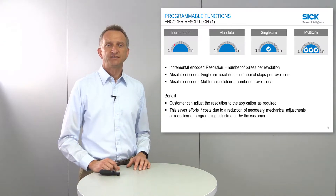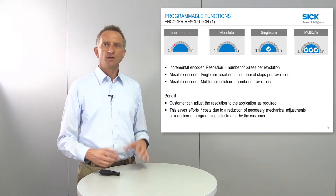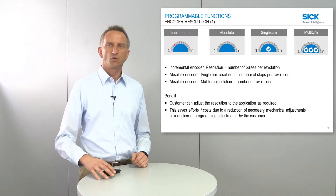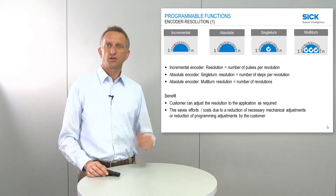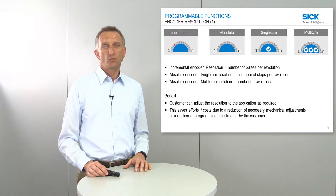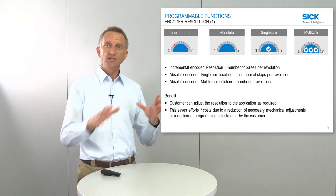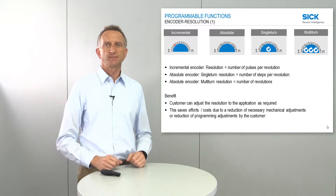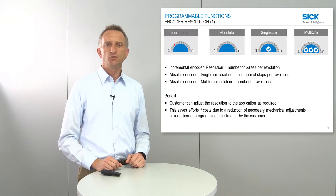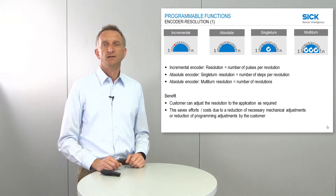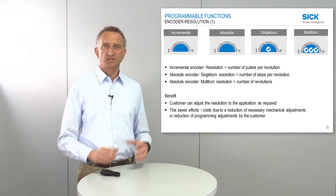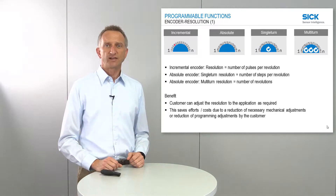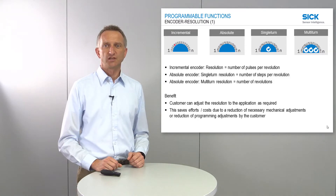The benefit of this is very clearly that the customer can directly and easily adapt the encoder and encoder resolution to his application, and this saves a lot of effort. For one thing, on the mechanical side, there is no need for mechanical adaption on the application. But it also notably reduces programming efforts on the PLC side, because this adaption of encoder resolution can easily be done directly on the encoder and does not need to be programmed on the PLC engineering tool side.